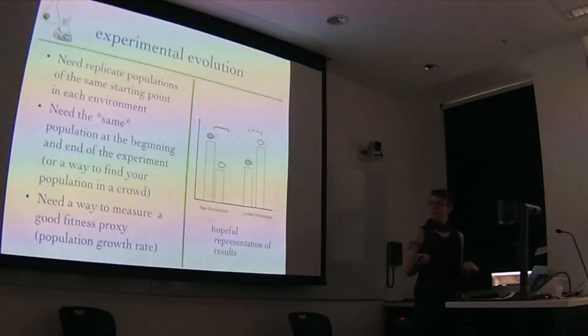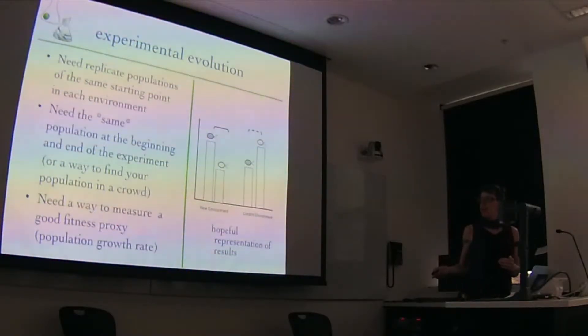If you're working with things that you can mark and recapture, you can do these experiments in the wild. If you're working with microbes, which are impossible to recapture, you can't really work with natural populations very well. That's just because you can't establish this line of descent very easily.